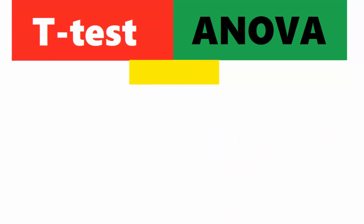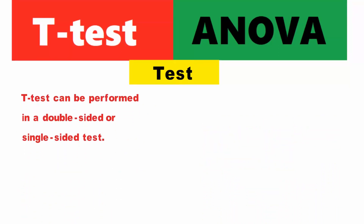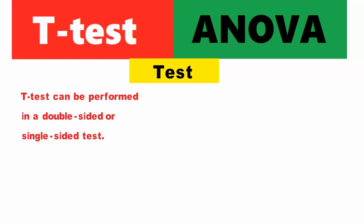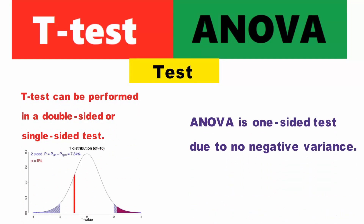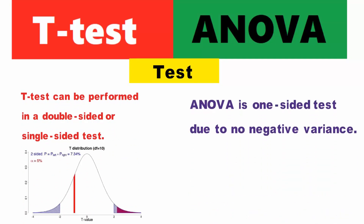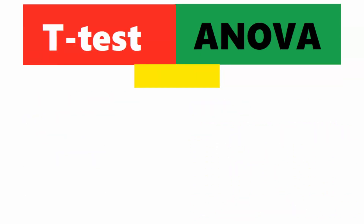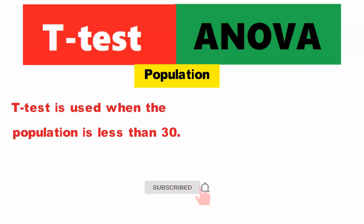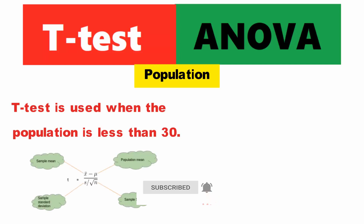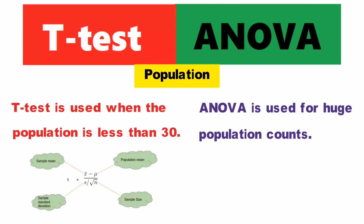7. Test: T-test can be performed as a double-sided or single-sided test. ANOVA is a one-sided test due to no negative variance. 8. Population: T-test is used when the population is less than 30. ANOVA is used for huge population counts.